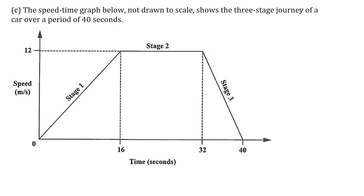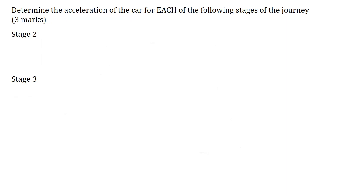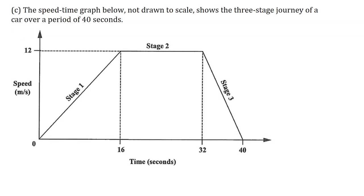Part C. The speed-time graph below, not drawn to scale, shows the 3-stage journey of a car over a period of 40 seconds. Determine the acceleration for each of the following stages for 3 marks. Stage 2: the gradient of a speed-time graph gives the acceleration. In stage 2 we have a horizontal line, and the gradient of a horizontal line is 0, so the acceleration is 0 meters per second squared.